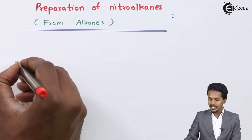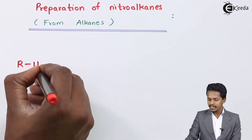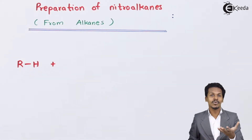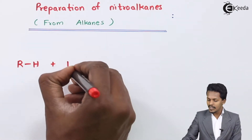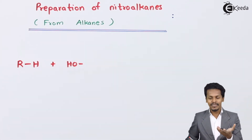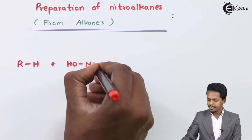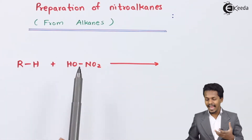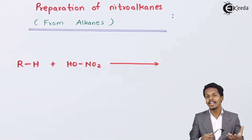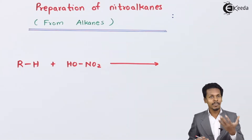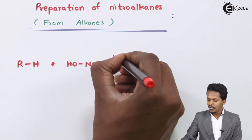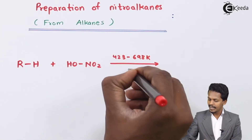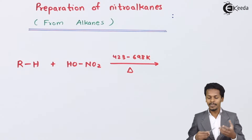In this case, suppose we are considering an alkane — that is RH — and suppose we are treating it with concentrated HNO3, that is nitric acid, which we can write as HONO2. The mixture of alkane and nitric acid are both in vapor phase, so the temperature we should provide in this case should be between 423 Kelvin to 698 Kelvin.